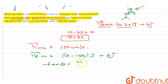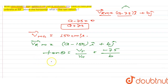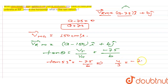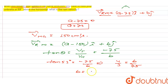To find theta: tan(theta) equals velocity in the vertical direction divided by velocity in the horizontal direction. The vertical component is −75 (negative because rain falls vertically downward) and theta is 53°. So tan(53°) = 75 divided by |b|. Since tan(53°) = 4/3, we get 4/3 = 75/|b|, which gives b = 100 centimeters per second.